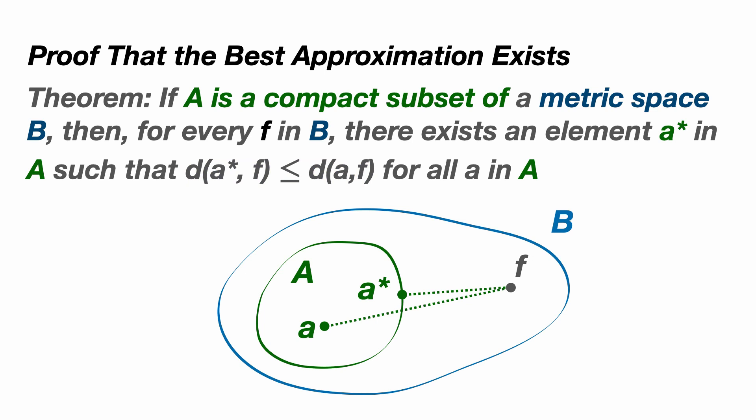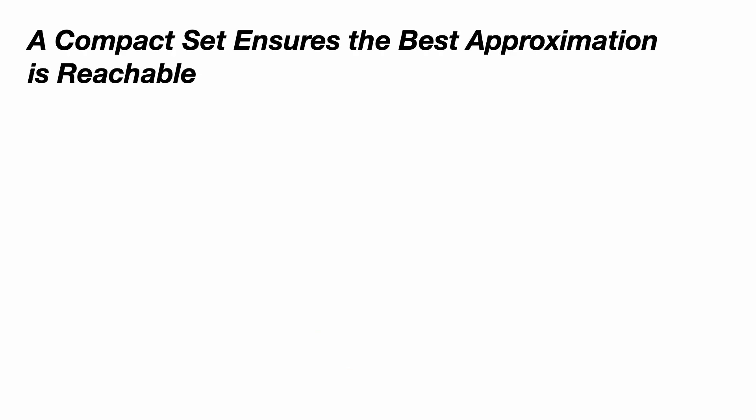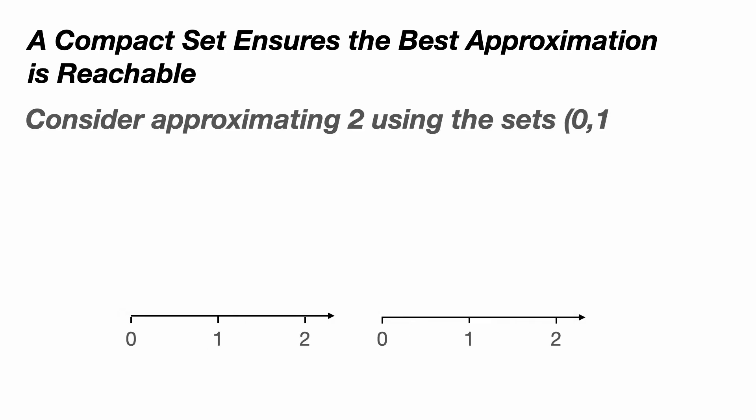Notice that we are dealing with a compact set of approximations. Let me first explain why before getting into the proof. The compactness of our approximation set capital A ensures that the best approximation can be reached. A compact subset of a metric space is closed and bounded.